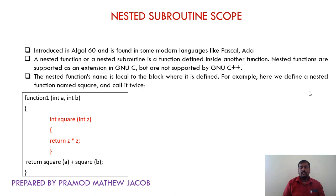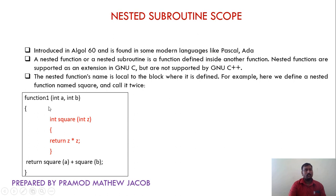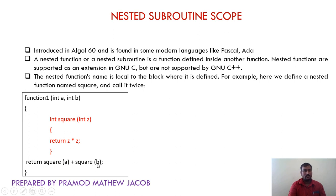Next is nested sub-routine scope — the concept of calling a function inside another function. Consider this example: function1 takes two arguments int a and b. Inside function1, we use a nested sub-routine named square. It takes a single argument and returns the square of that variable — if we pass z as 5, it returns 5*5 = 25. After the nested sub-routine ends, inside the main function we return square(a) + square(b). If we pass 5 and 2, it returns square(5) = 25 plus square(2) = 4, giving 29.